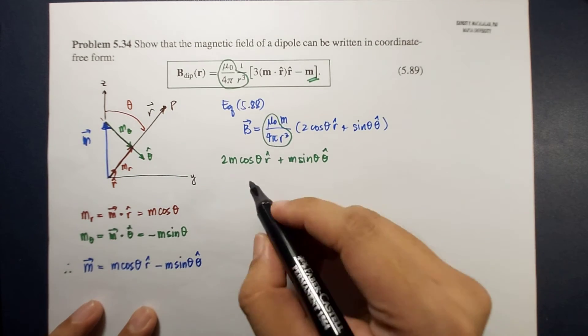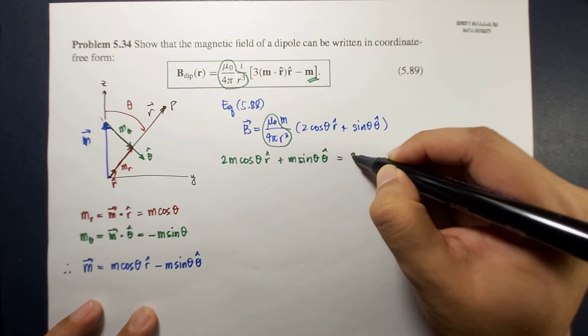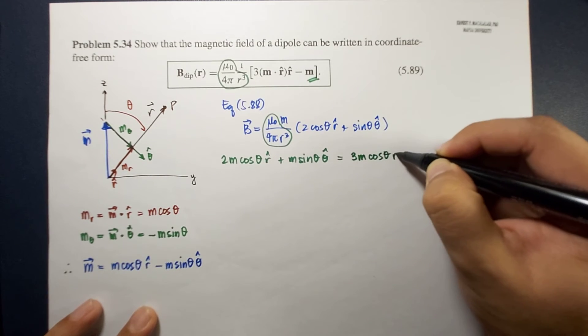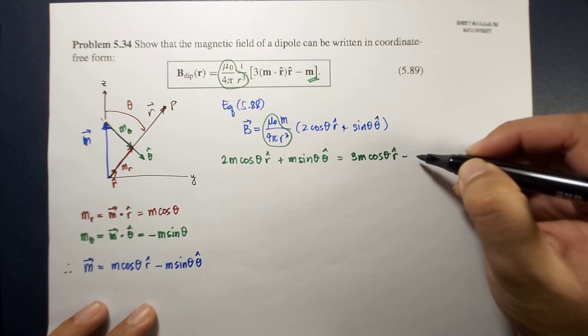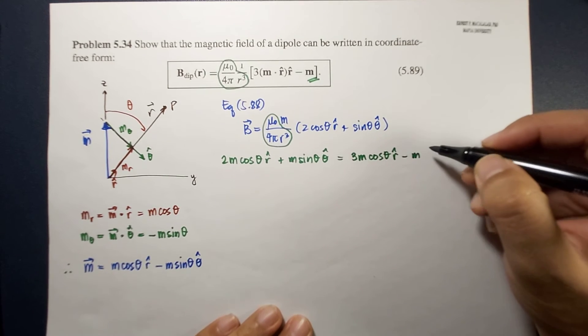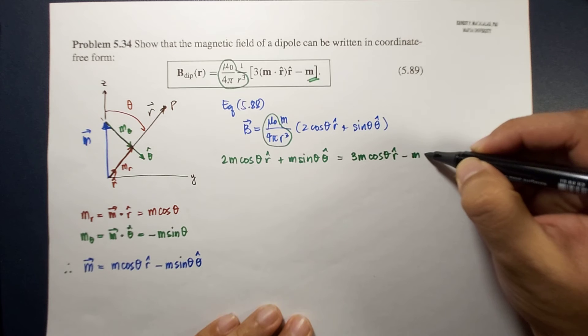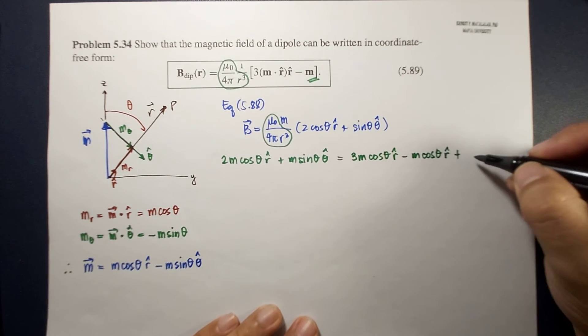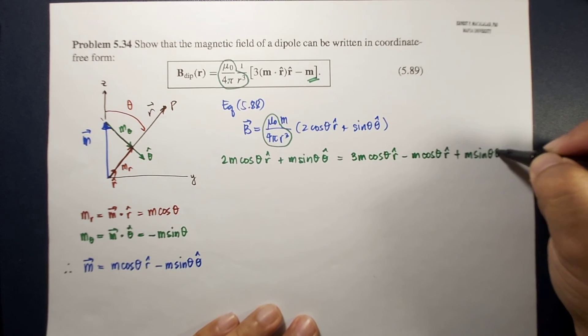then this should be equal to 3m cosine theta r hat minus m cosine theta r hat plus m cosine theta theta hat.